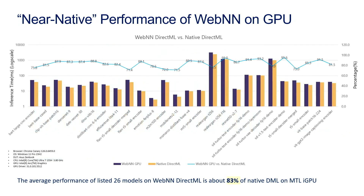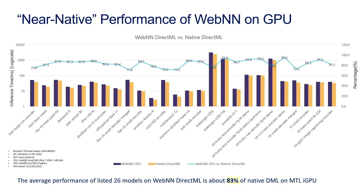On GPU, across 26 models, above 83% performance of native is delivered by WebNN. And on NPU, the same — above 80% of native performance delivered by WebNN.